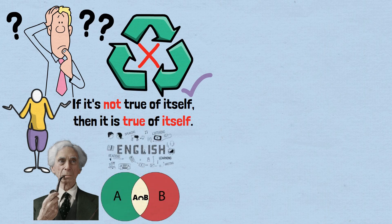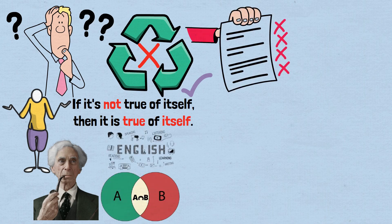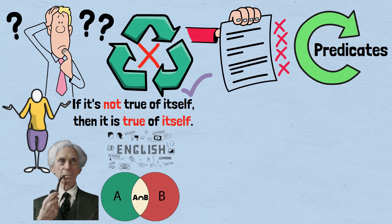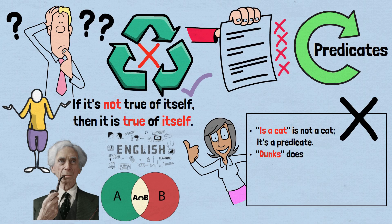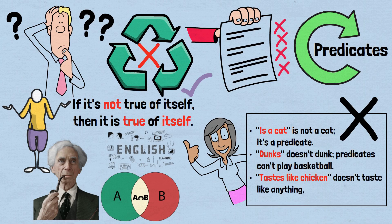And unlike with set theory, we can't just change the rules here. Predicates demonstrably can be true of themselves in natural language. Let's look at some concrete examples of predicates that are not true of themselves. 'Is a cat' is not a cat. It's a predicate. 'Dunks' doesn't dunk. Predicates can't play basketball. 'Tastes like chicken' doesn't taste like anything. It's a predicate.